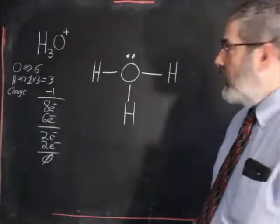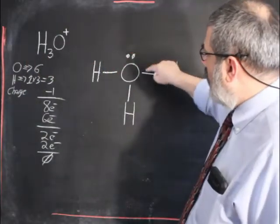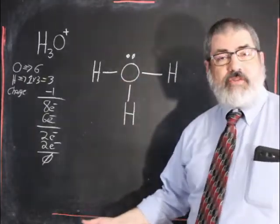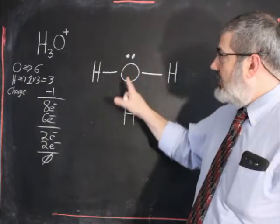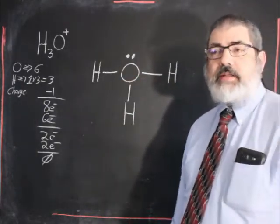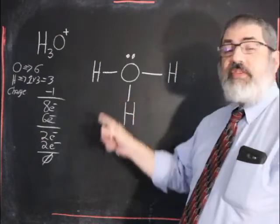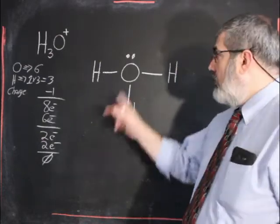So we put a lone pair on the oxygen. That gets us to zero. Two, four, six, eight. All of our electrons have been used and oxygen is obeying the octet rule. Hydrogen does not obey the octet rule, but oxygen must.